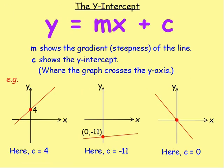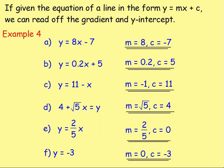The y-intercept is the point at which the graph crosses the y-axis. So if the line crosses at 4, the value of c would be 4. If the graph crosses at negative 11, then c would be negative 11. In order to read off the gradient and the y-intercept, you have to make sure the line is in the form y equals mx plus c. The number in front of x shows you the gradient m, and the number on its own shows you the y-intercept c.